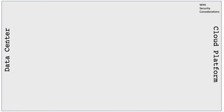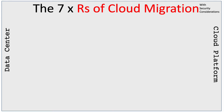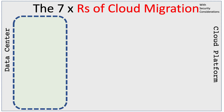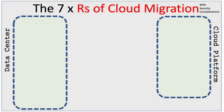In today's session we are going to talk about the seven R's of cloud migration — exactly what are they? So let's look at our scenario here. On the left hand side we have our traditional data center and on the right hand side we have our cloud platforms, such as AWS, Azure, GCP — what we're essentially moving to.